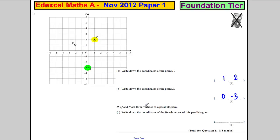P, Q, and R are vertices of a parallelogram. Write down the coordinates of the fourth vertex of this parallelogram. Well, let's join them up.